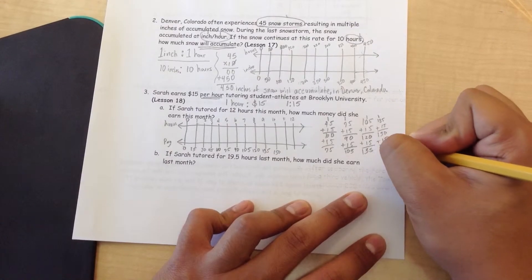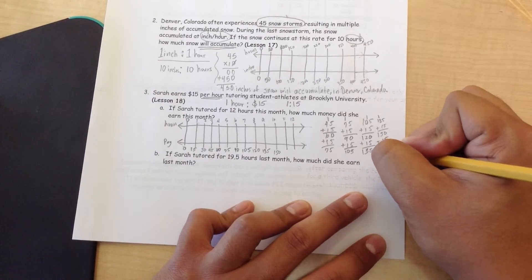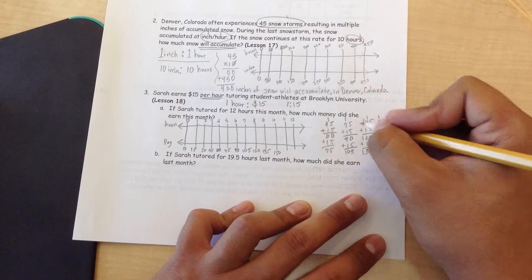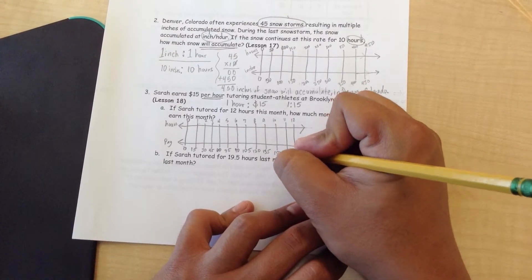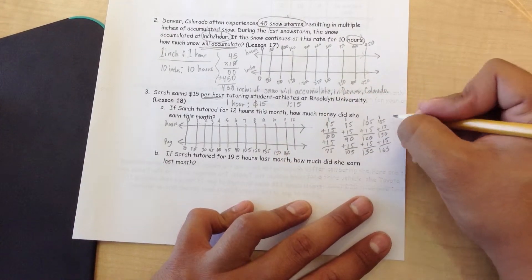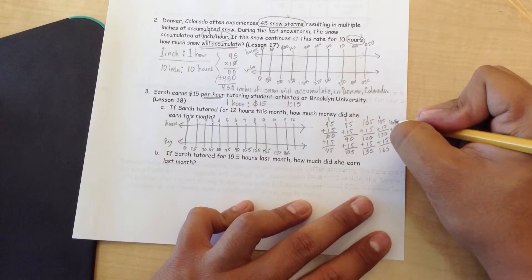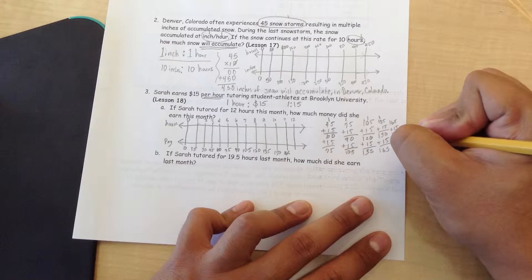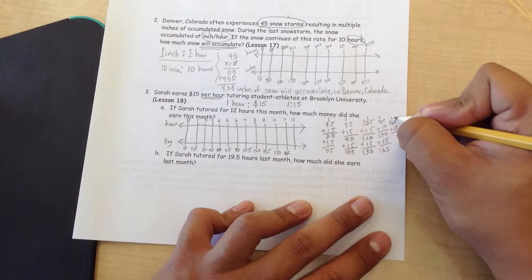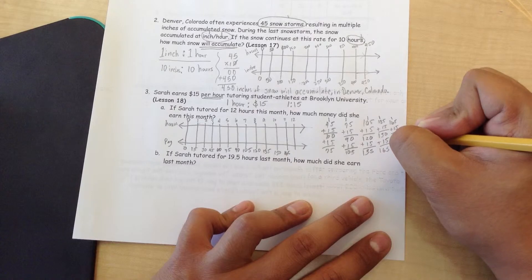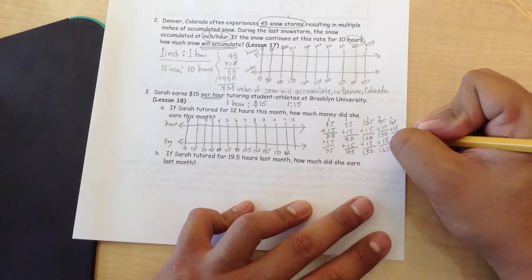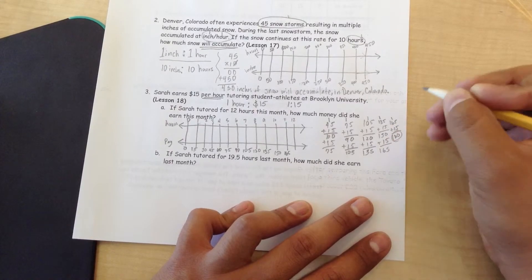Plus 15, 0 plus 5 is 5, 5 plus 1 is 6, 1 plus nothing is 165. 165 plus 15, 5 plus 5 is 0, carry the 1 over, 1 plus 6 is 7, 7 plus 1 is 8, 1 plus nothing is 1, all equaling 180.